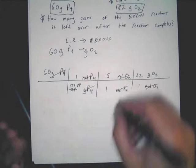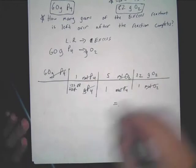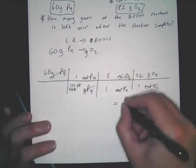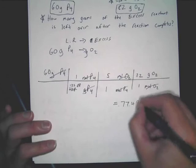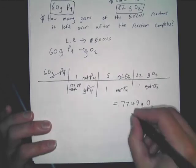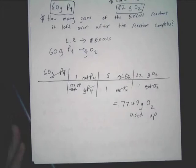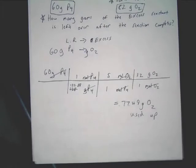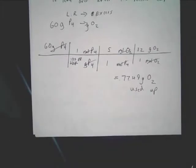You're left with grams of O2. You do the math, you end up with, I believe, 77.49 grams of O2 used up. Yeah, stop. Now, that is how much oxygen is used up in the reaction.